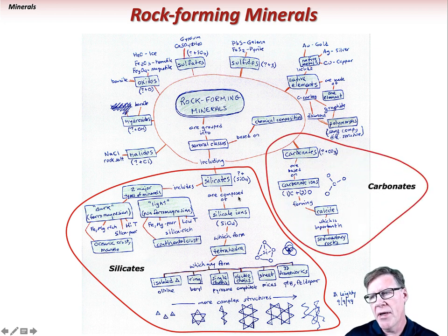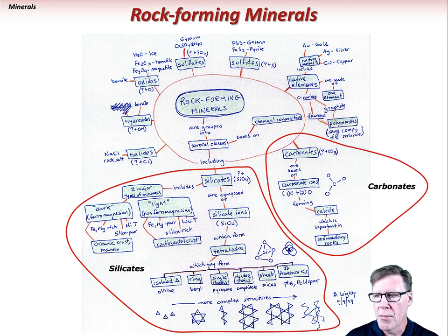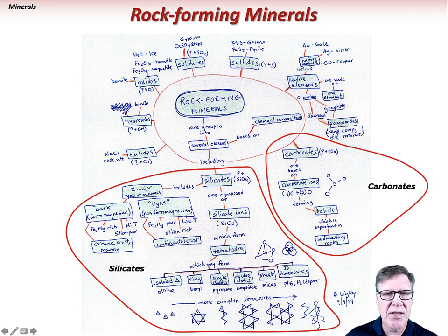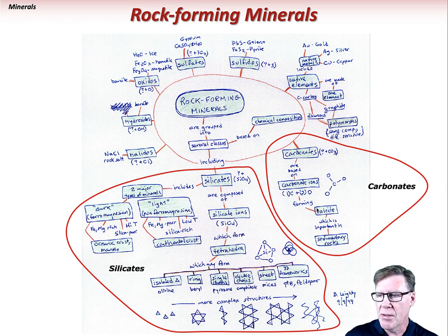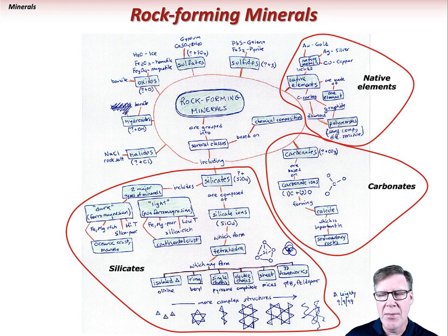Moving around the concept map, we have the carbonates — another very important mineral group. That is basically carbon and three oxygens: the carbonate ion bound with other elements to form carbonate minerals. The most common one is calcite — calcium and carbon and three oxygens — calcium carbonate, an important sedimentary mineral. We also have native elements, which are made of one element, typically bound with the same element — this could be gold, silver, or copper.